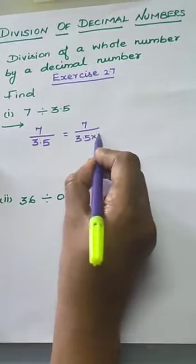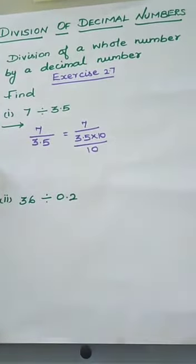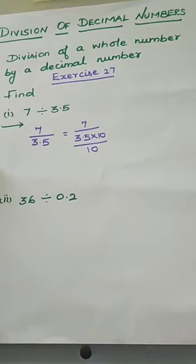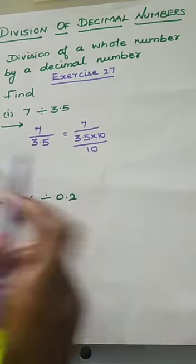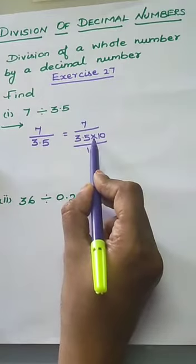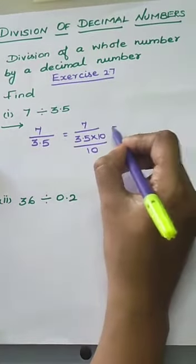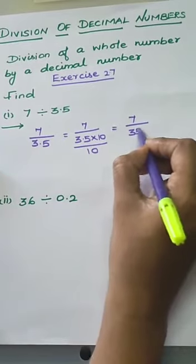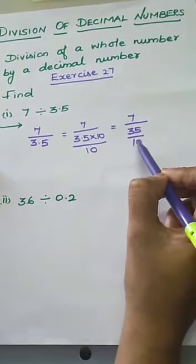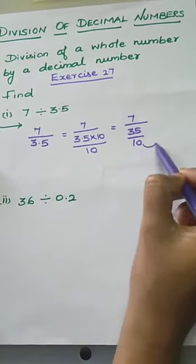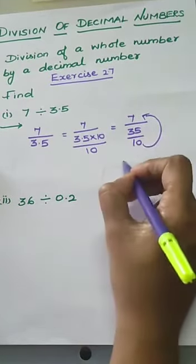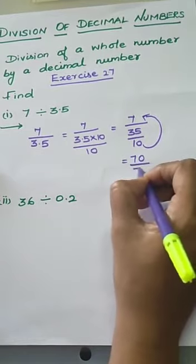So 3.5 into 10 by 10. When we multiply using 10, the decimal point moves towards the right. If we divide using 10, the decimal point moves towards the left. Now we multiply 3.5 by 10 — the answer is 35. So we have 7 by 35 divided by 10. This 10 moves to the numerator, so we write 7 into 10, which is 70 by 35.